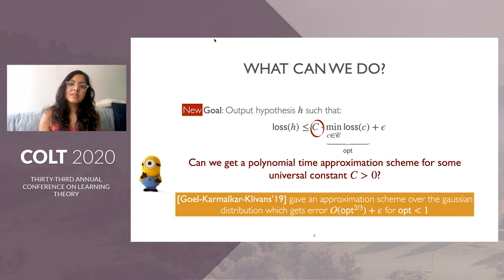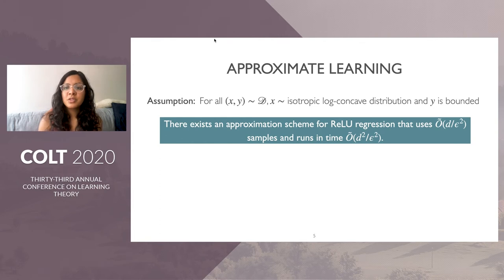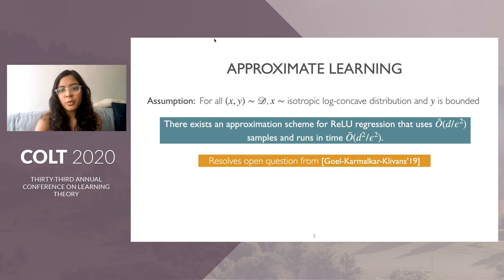Our paper answers in affirmative that we can get a constant opt approximation scheme. We can relax our assumption to work for isotropic log concave distributions, meaning mean zero and covariance matrix identity, with bounded y. We show there exists a polynomial time approximation scheme with samples almost linear in dimension and runtime quadratic in dimension, optimal up to log factors.